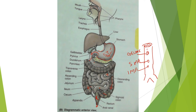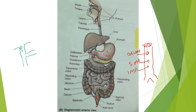The venous drainage is through the portal venous system — an important aspect, particularly in cases of liver cirrhosis. The portal vein is formed by the combination of the superior mesenteric vein, coming from the intestine, and the splenic vein, coming from the spleen. The portal vein opens into the liver where purification of blood occurs.